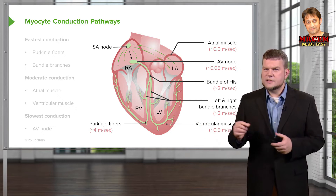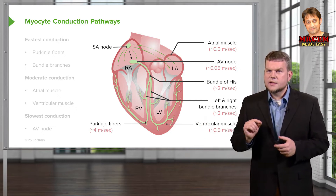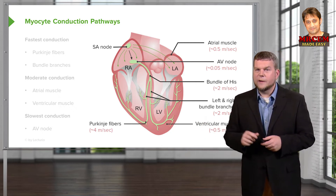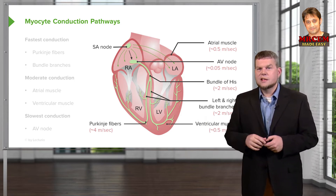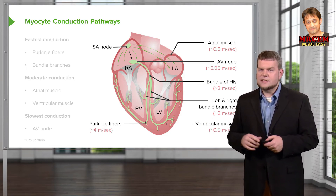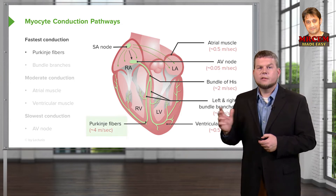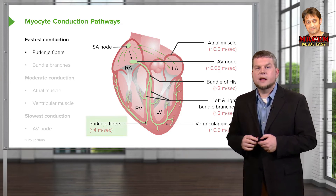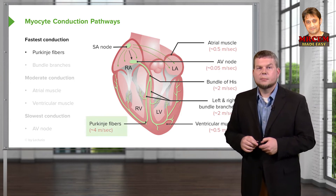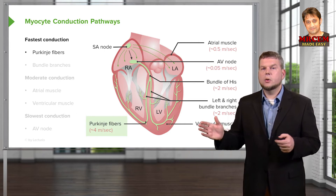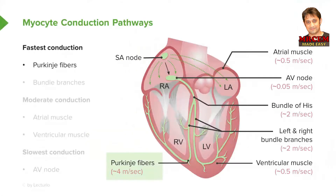Some of the places along this conduction pathway are faster than others. The fastest thing we have are Purkinje fibers. Purkinje fibers are really quick conductors — as soon as they get electricity, they move it right on.